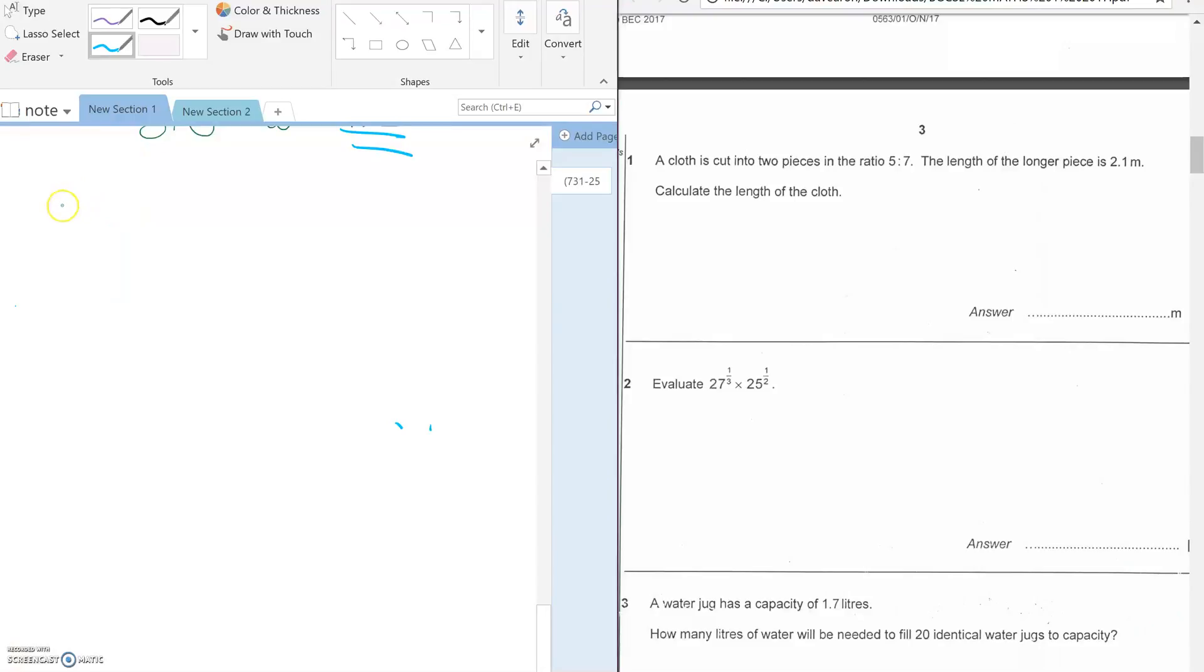So we have a cloth here, let's say the length is X. The length of the cloth is X, and then it is divided into the ratio 5 is to 7. And then they tell us that the longer piece, this one here, is 2.1 meters, and then they tell us that we should find the total length of the cloth.